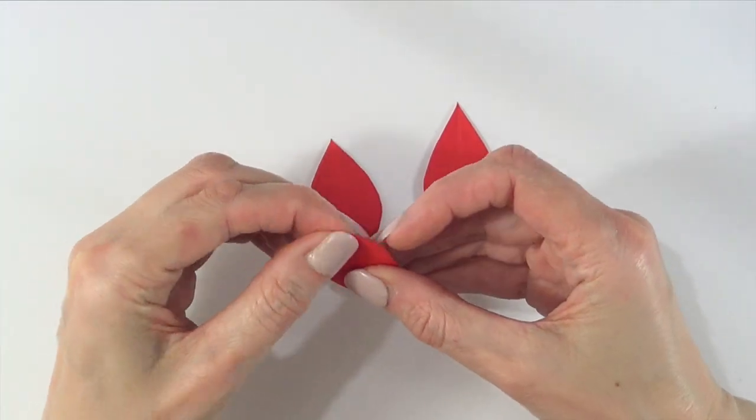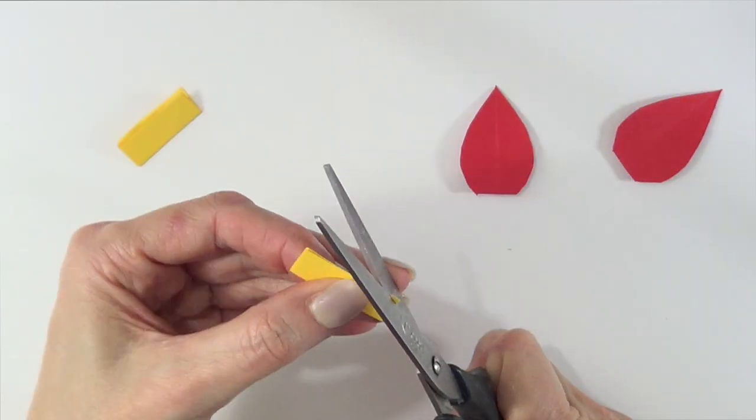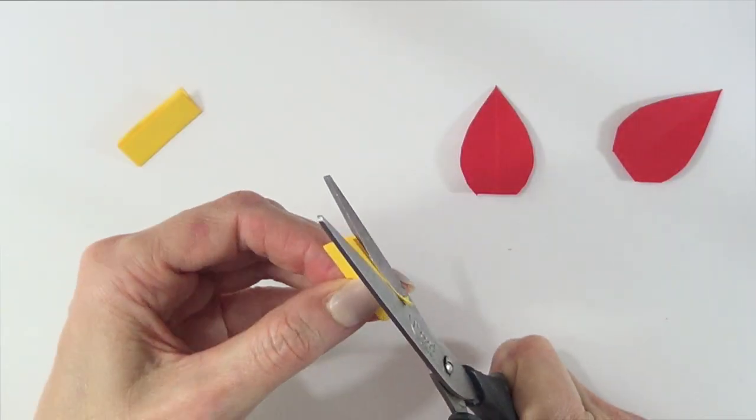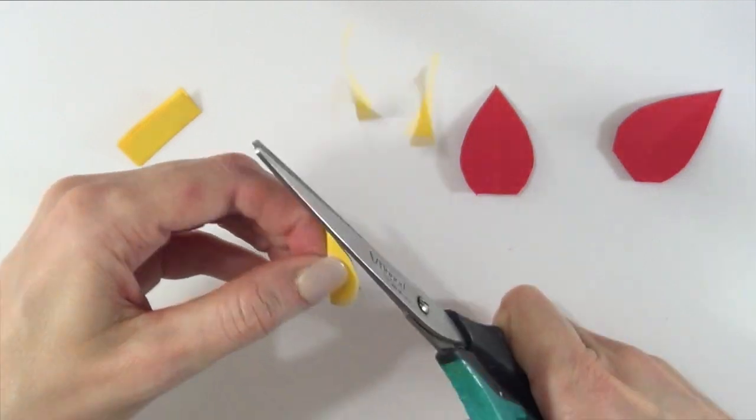The same for the yellow part. I'm going to be folding that and then just cutting it. Basically doing the same thing, but in this case I'm just not going to be leaving the part on the bottom.